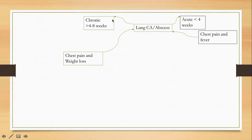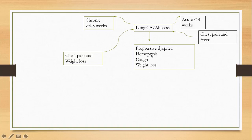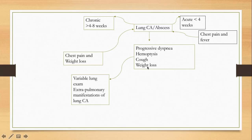Lung cancer patients usually have chronic symptoms lasting more than four to eight weeks. The differentiating features between lung abscess and lung cancer are duration, presence of fever, and presence of weight loss. Both conditions can develop progressive dyspnea, and patients can develop hemoptysis — especially lung cancer patients, who also present with cough and weight loss.